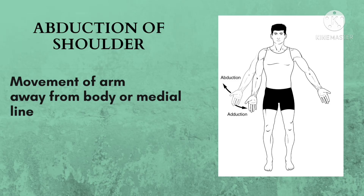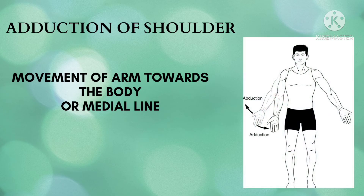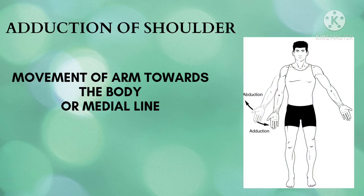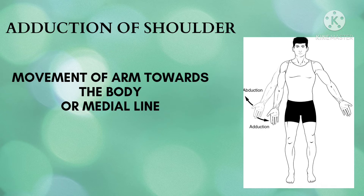Now let's move on to abduction and adduction. The term itself gives you the answer. Abduction means taking your arm away from the body. Adduction means taking your arm towards the body. As you can see in the diagram, the person is doing abduction as well as adduction. When we do exercises like lateral raises, we are doing abduction and adduction.